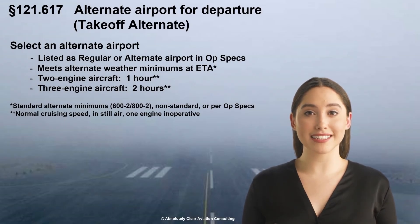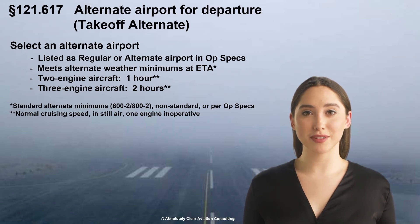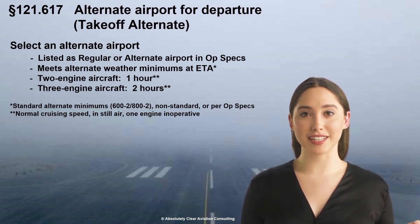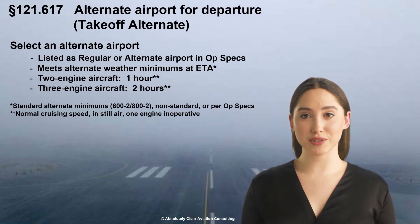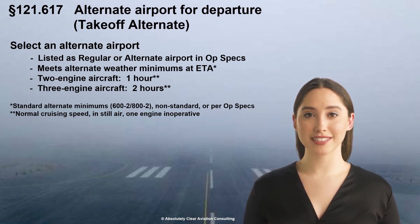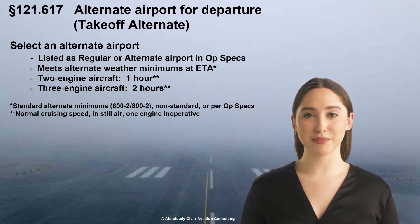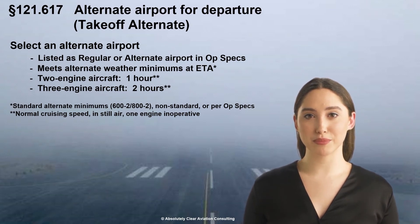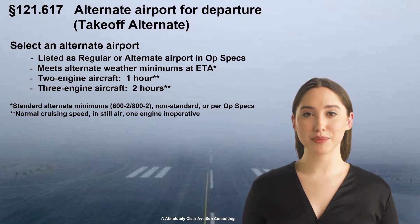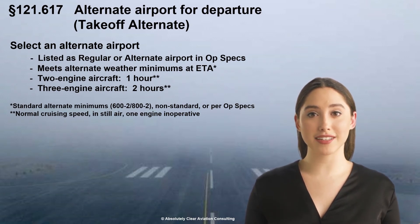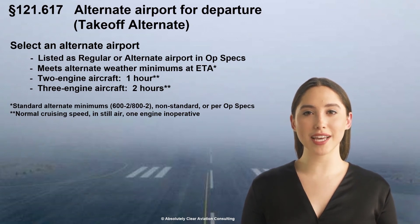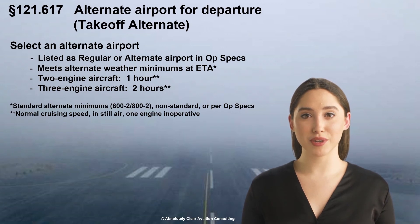An airport specified as a takeoff alternate must be listed in the OPSPECS as a regular or alternate airport. Per 121.625, the minimum weather conditions that must be expected at the specified takeoff alternate must meet applicable alternate minimums, which could be standard alternate minimums of 600 feet ceiling and 2 statute miles visibility if a precision instrument approach is operational to a suitable runway, 800 feet ceiling and 2 statute miles visibility for a non-precision approach, non-standard minimums if published in terminal procedures for the preferred runway and applicable to the approach speed for your aircraft, or most commonly, the minimum weather conditions per your air carrier's OPSPECS. Ensure that both the forecast and latest weather report are considered.